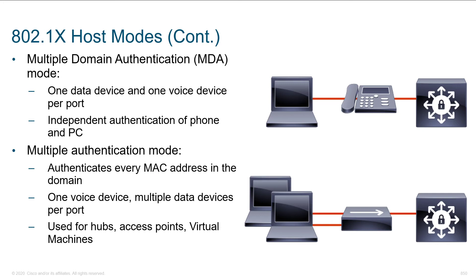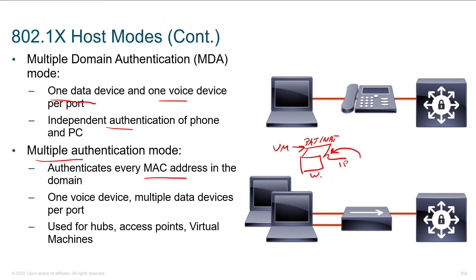Multi-domain authentication gives us one data device and one voice device per port with independent authentication of the phone and PC. Multiple authentication mode authenticates every MAC address — so when you fire up a Parrot Security VM, it needs a 802.1x supplicant installed. If it hasn't been installed yet, a workaround is to configure the VM to NAT through the laptop's NIC rather than bridging. Authenticate Windows first, then NAT the Linux VM's traffic through that outside interface to get past 802.1x authentication long enough to patch.